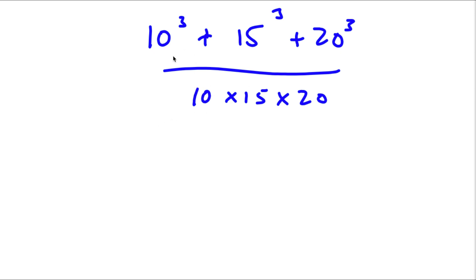Alright, so I have 10 to the power of 3, plus 15 to the power of 3, plus 20 to the power of 3, all divided by 10 times 15 times 20.